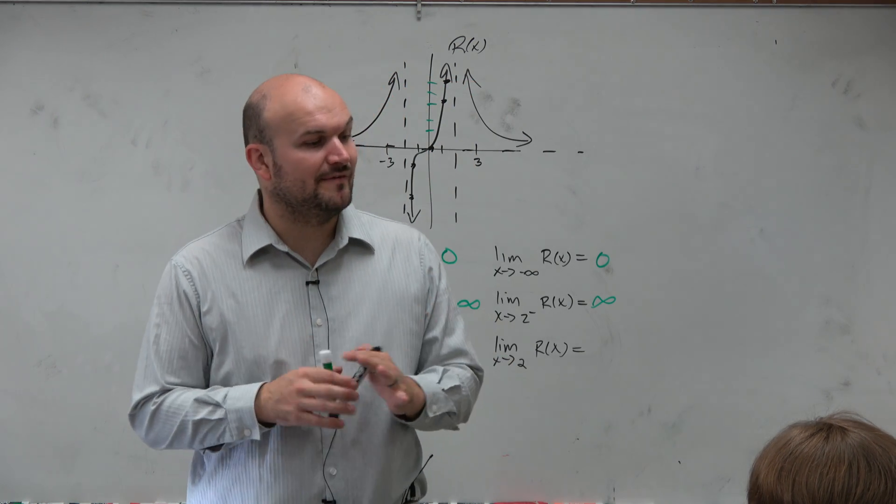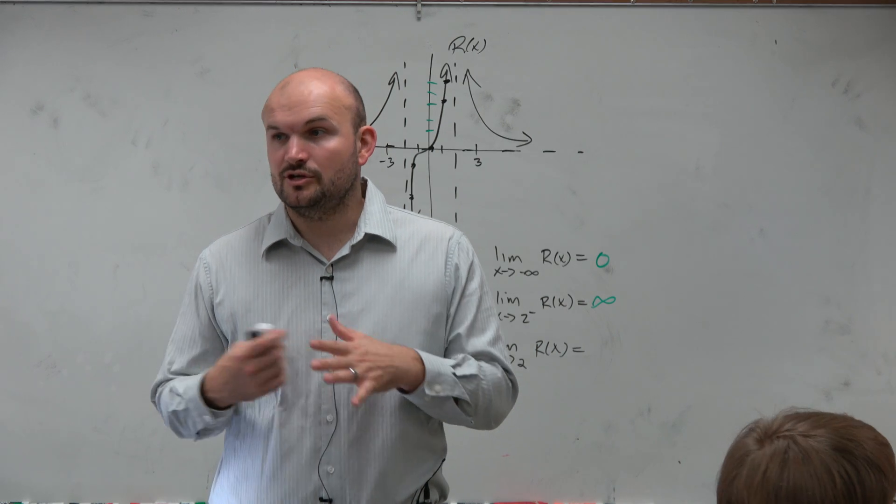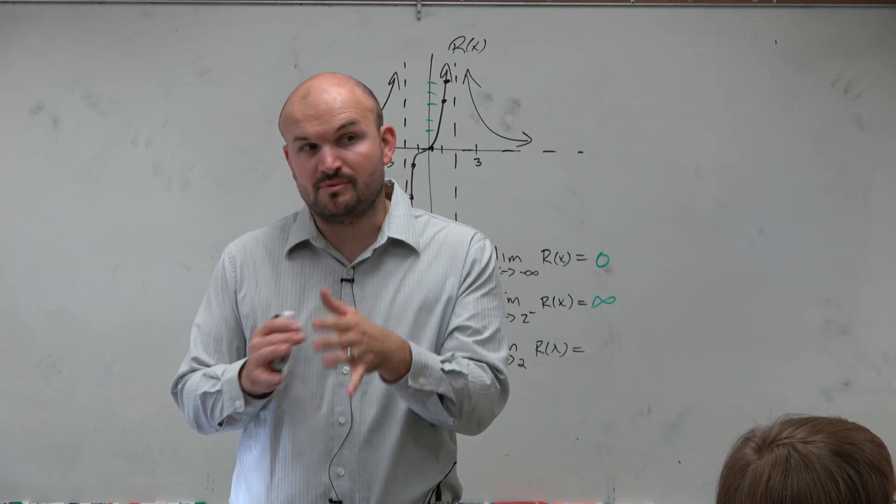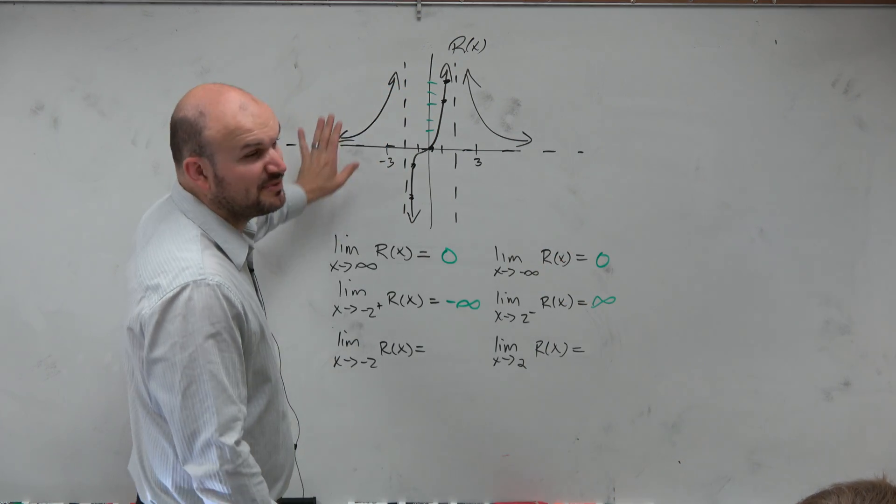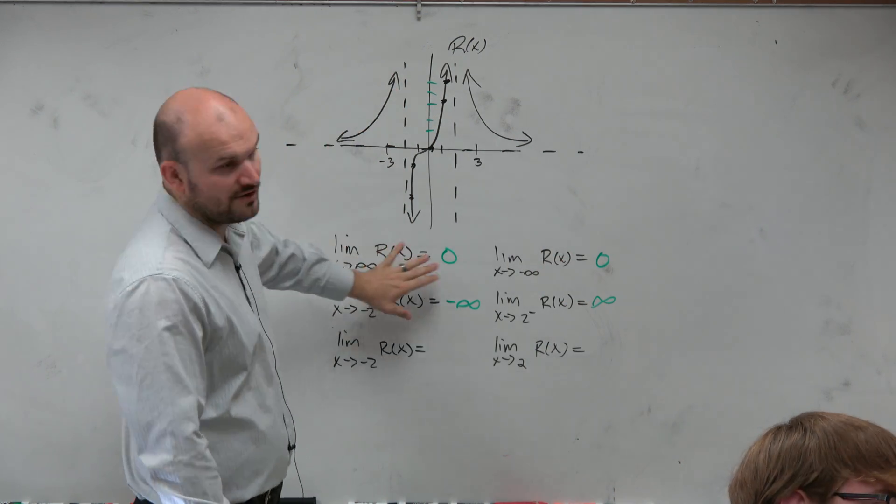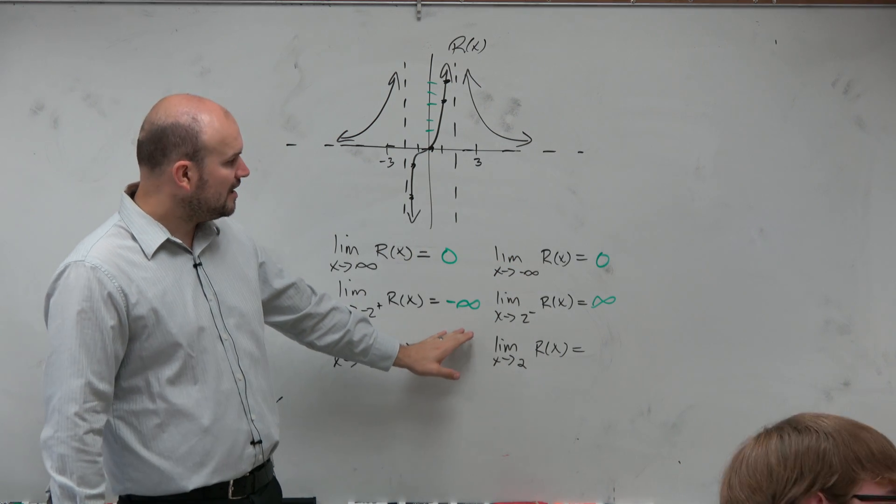So here are some left and right hand behaviors. So when you guys have asymptotes, you're going to have them approaching infinity. Because again, they don't touch your vertical asymptotes, but they approach them, right? And that's from the end behavior as well as from the left and right hand.